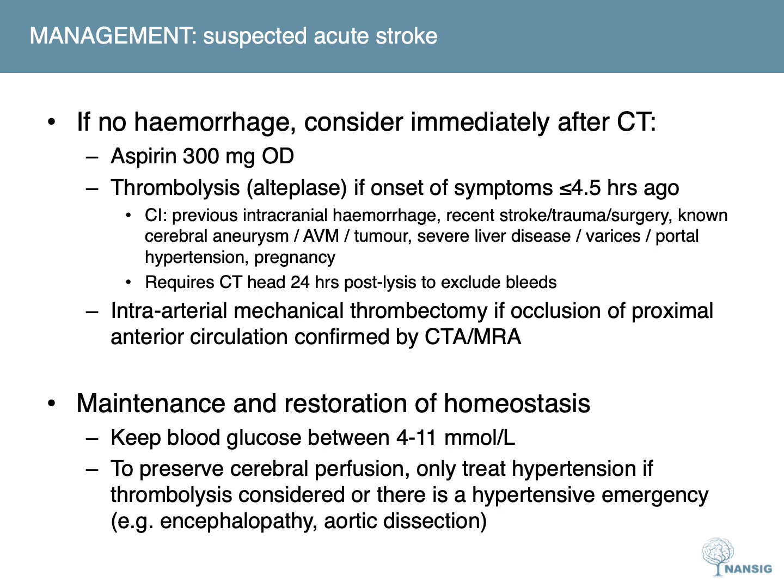If there are no signs of hemorrhage on CT, there are a few treatment options to consider immediately: 300mg of aspirin to be taken daily; thrombolysis with alteplase if the onset of symptoms is within four and a half hours. There are many contraindications to thrombolysis and it requires a CT head to be taken 24 hours post-thrombolysis to exclude bleeds. Intra-arterial mechanical thrombectomy can provide additional benefits to patients with occlusion of the proximal anterior circulation confirmed by CT or MR angiography. Blood glucose should be kept between 4 and 11 mmol/L, and to preserve cerebral perfusion, hypertension should only be treated if thrombolysis is considered or if there is a hypertensive emergency such as encephalopathy or aortic dissection.